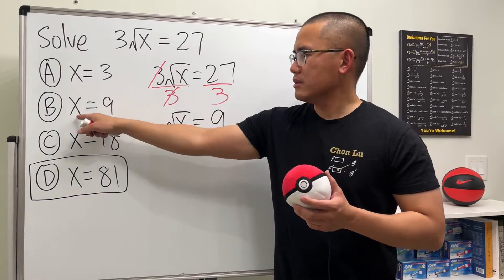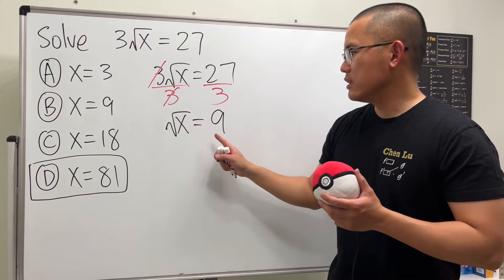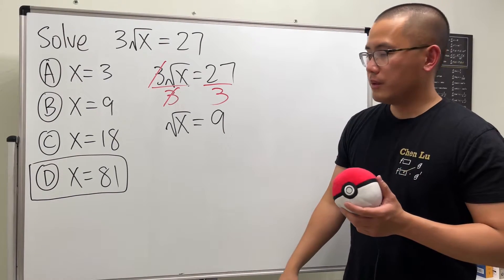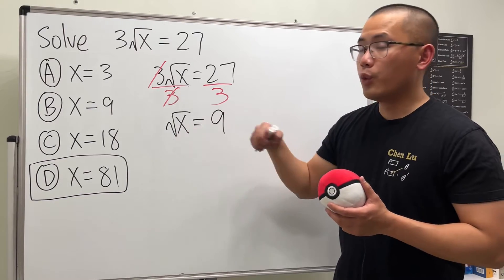But we're not done yet, though. Because, you know, this is square root of x. It's equal to 9, right? So what do we do? Well, to get rid of the square root, we square both sides.